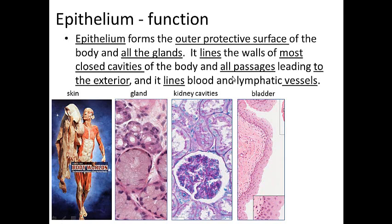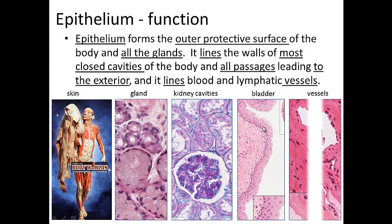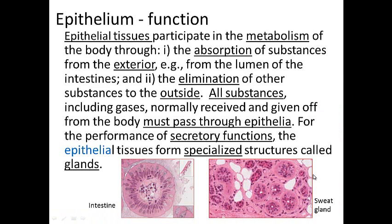Epithelium also lines passages to the exterior. Here in the urinary bladder, where urine is going out, we have transitional epithelium. It also lines blood vessels — we see a blood vessel here, a lymphatic, and a little capillary with endothelial cells. Simple squamous epithelium lines those cavities.